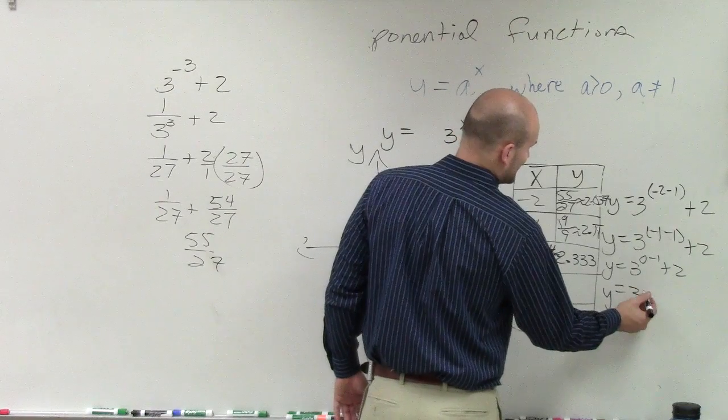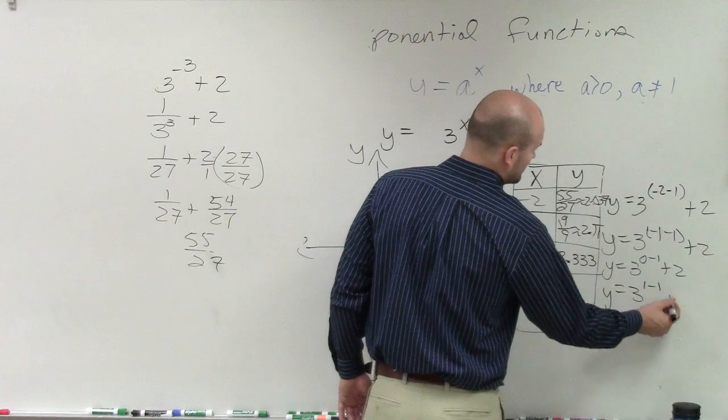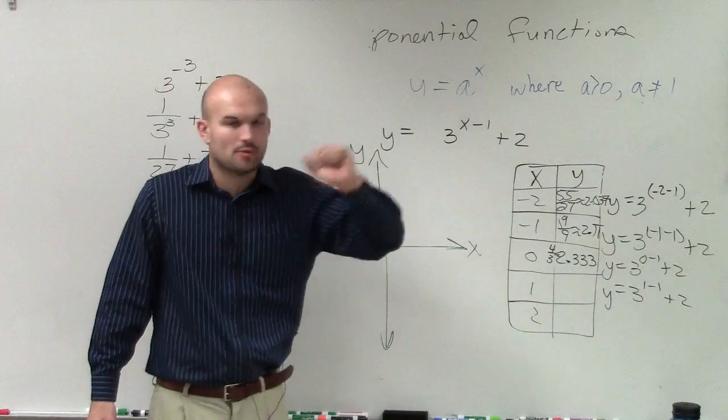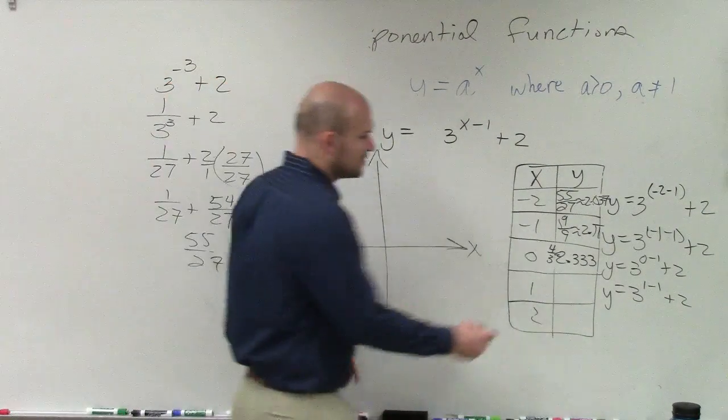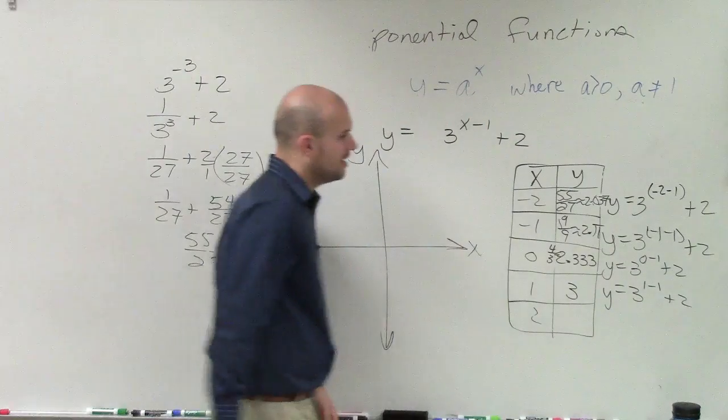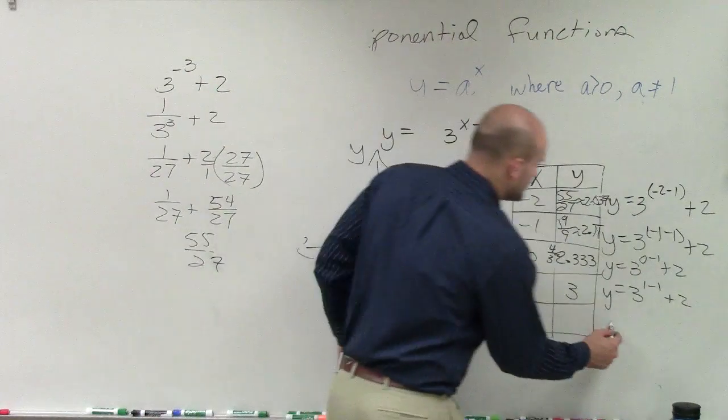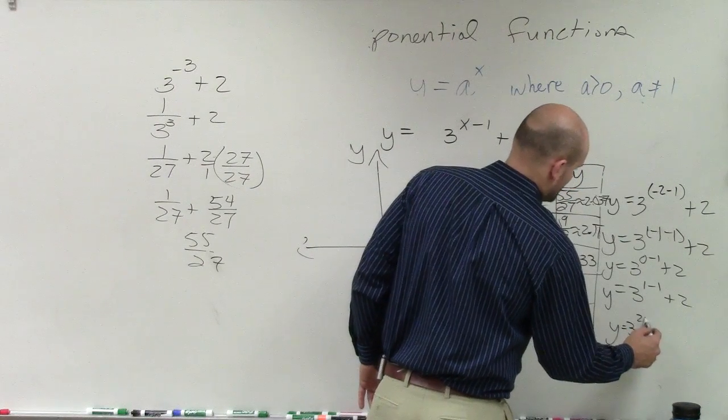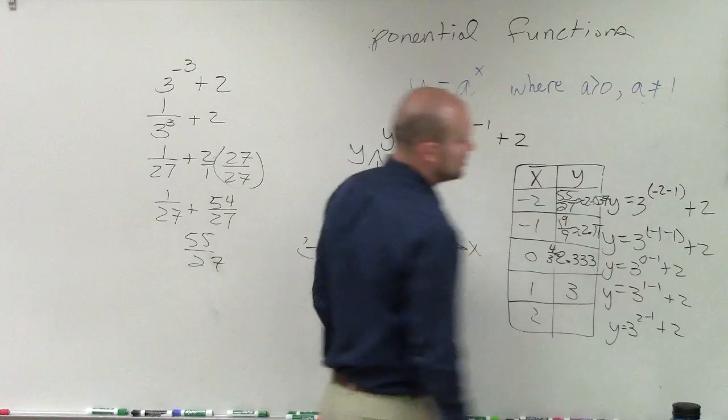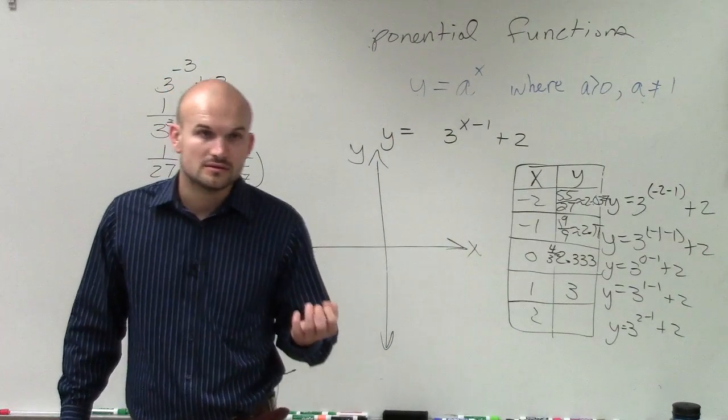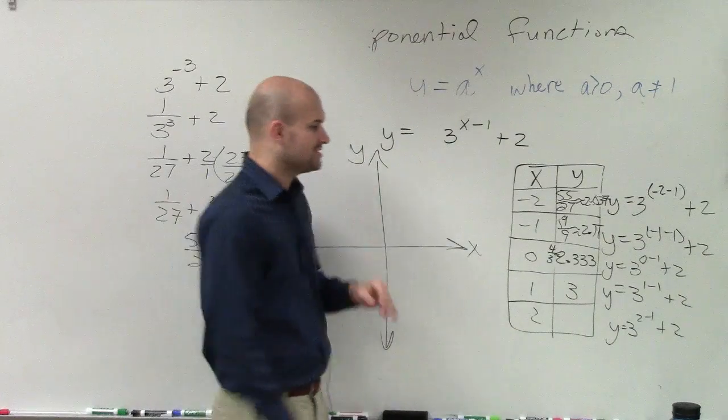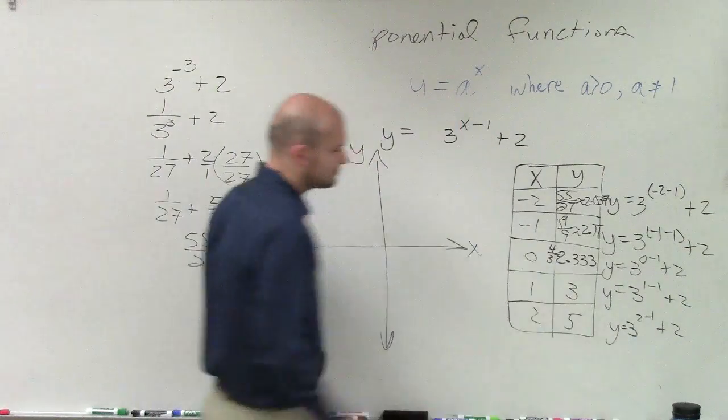So y equals 3 to the 1 minus 1 plus 2. Well, 1 minus 1 is 0. 3 to the 0 power is 1. 1 plus 2 is 3. And then I have 2. y equals 3 to the 2 minus 1 plus 2. 2 minus 1 is 1. 3 to the first power is 3. Plus 2 is 5.